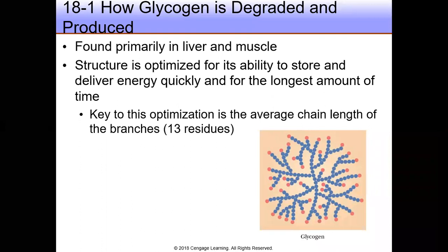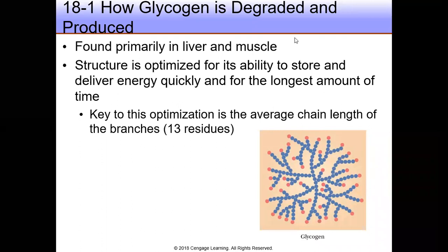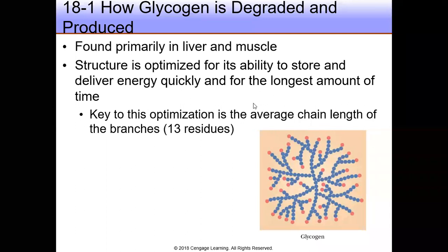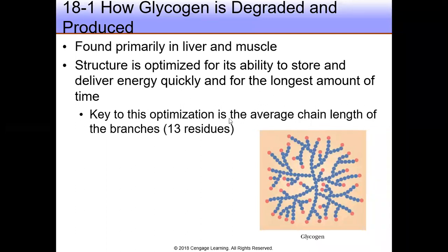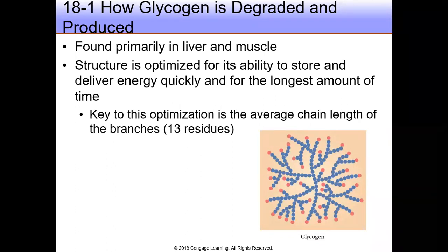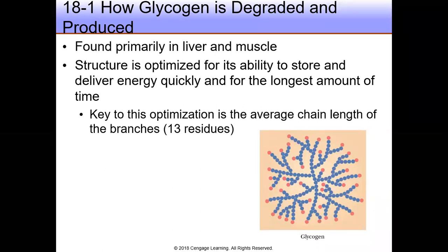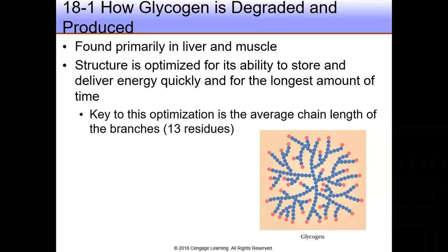Studies show that glycogen is optimized for its ability to store and deliver energy quickly and for the longest amount of time possible. The secret for that optimization is the average chain length of the branches: 13 residues. If the average chain length were much greater or much shorter, glycogen would not be an efficient vehicle for energy storage and release on demand.